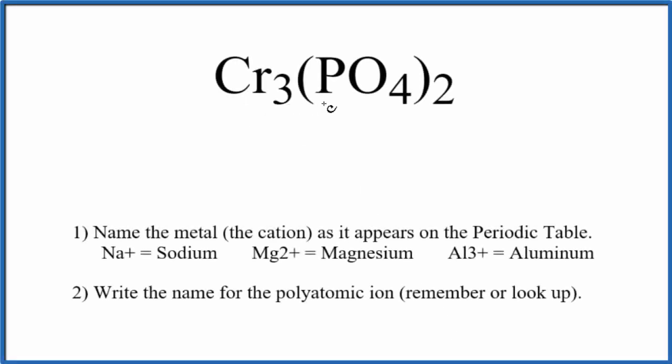To write the name for Cr3(PO4)2, the first thing we need to recognize is this PO4 here. This is a polyatomic ion, the phosphate ion. We actually have two phosphate ions, so those two phosphate ions are bonded to these three chromium atoms.